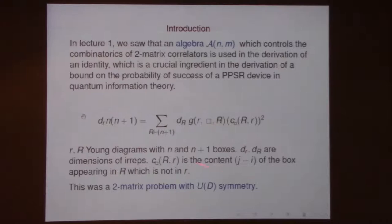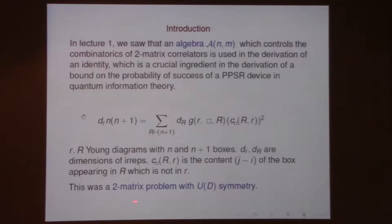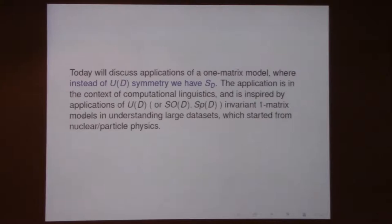This algebra comes from permutations. The interest in it comes from the fact that it is related to two-matrix problems — specifically a two-matrix problem with unitary symmetry, which is a two-matrix generalization of the one-matrix U(D)-symmetric problem. Today we'll talk about another kind of generalization of the one-matrix model with U(D) symmetry, but instead we'll think about symmetric group symmetry — imposing that our observables have S(D) symmetry.